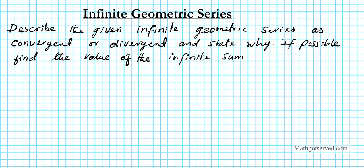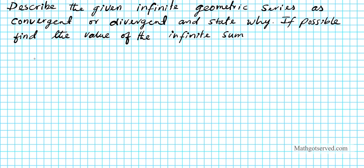Let's take a look at question number 1. We have an infinite geometric series defined by the following terms: 1/2 plus 3/8 plus 9/32 plus dot dot dot. This is a sum that continues forever to infinity because of these dots.